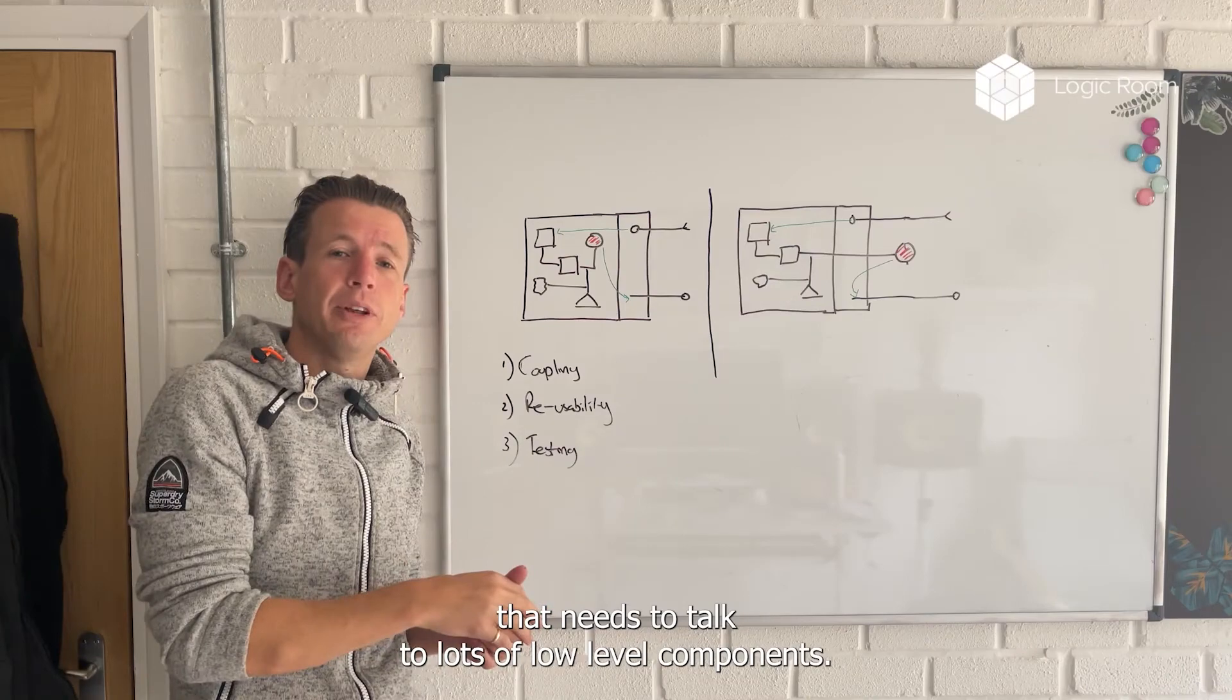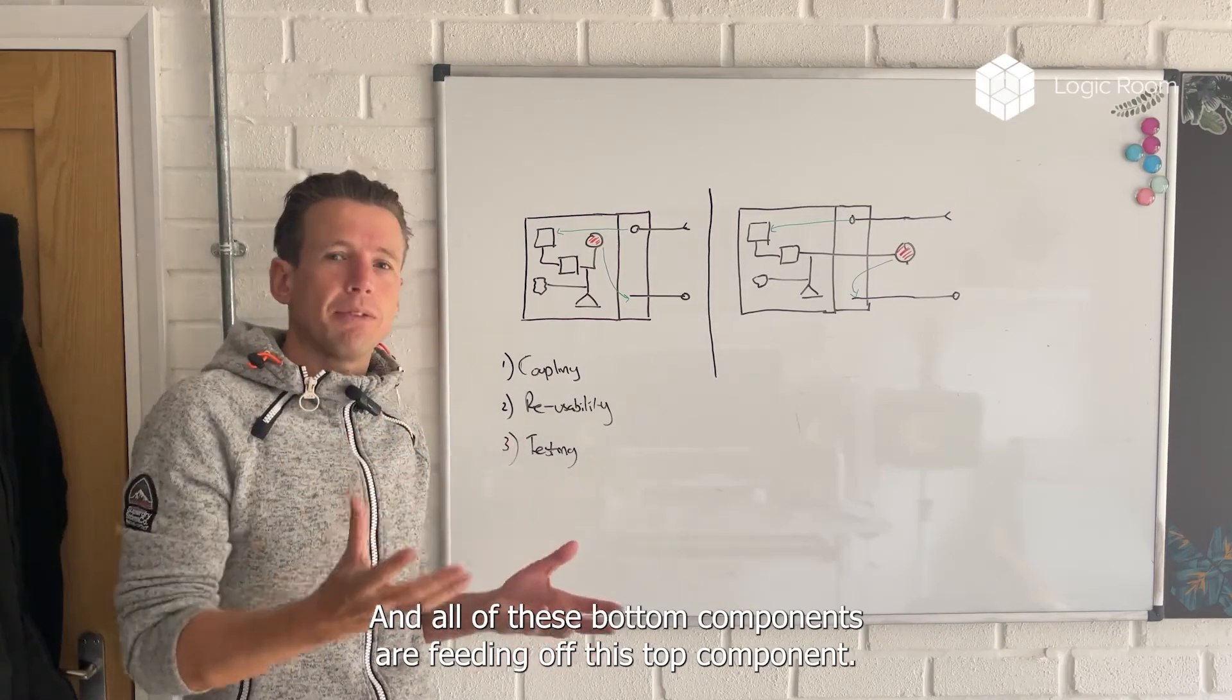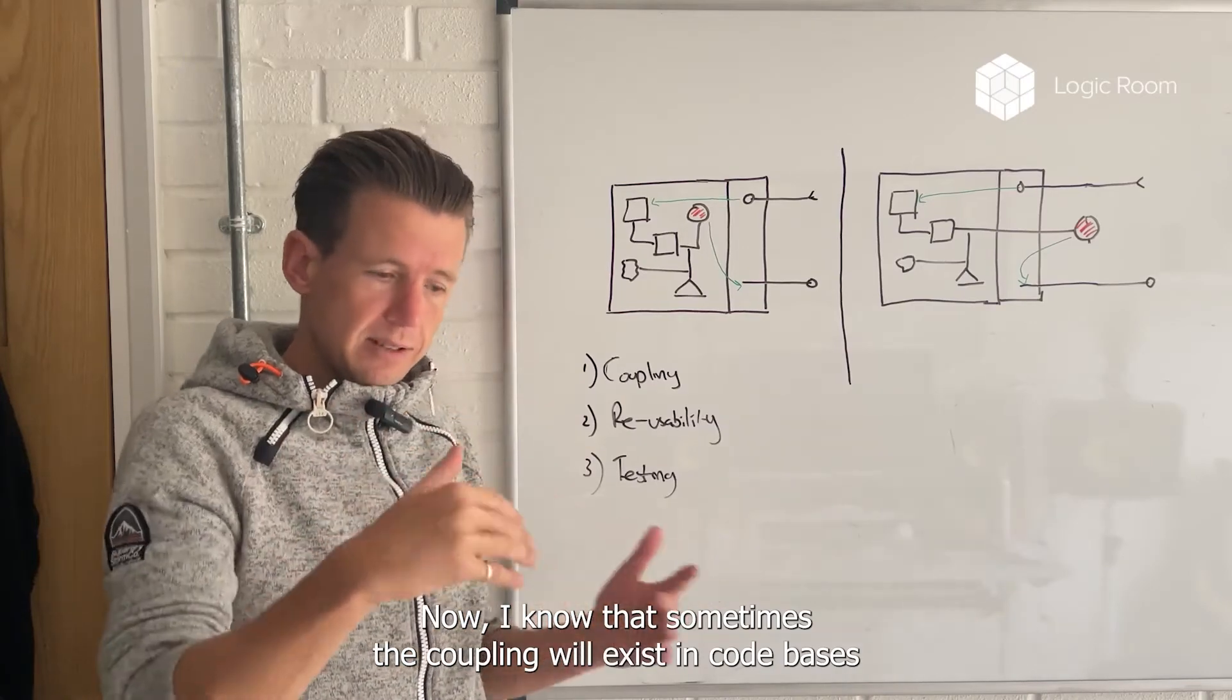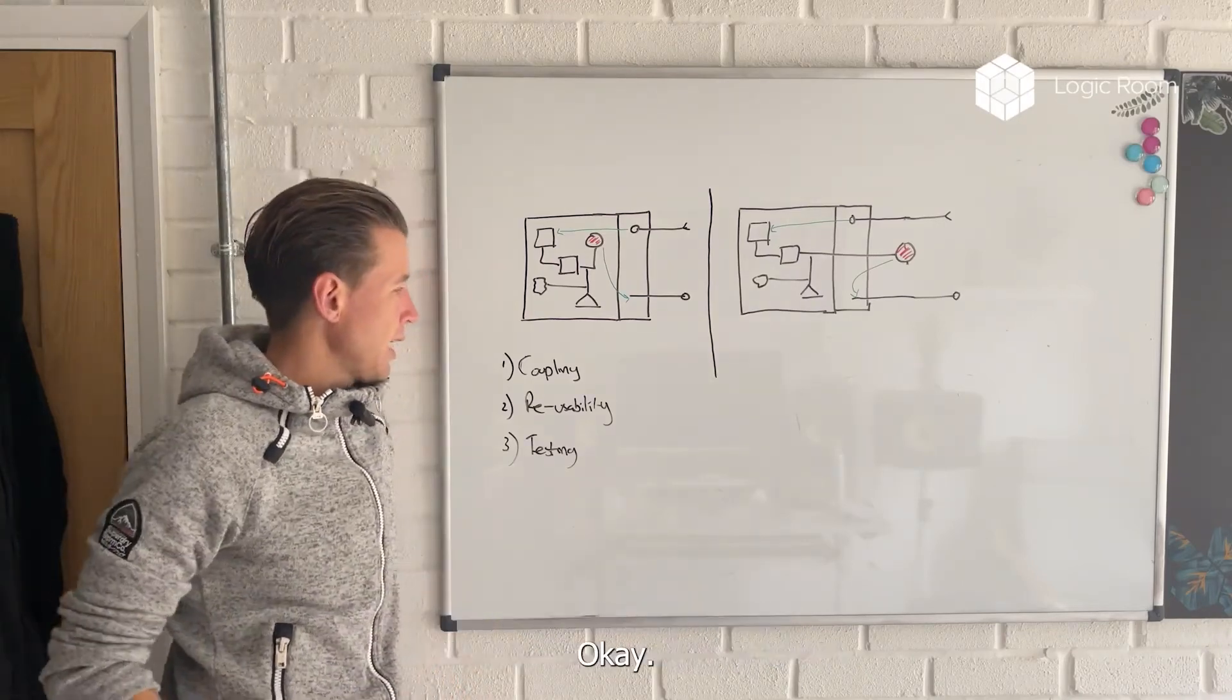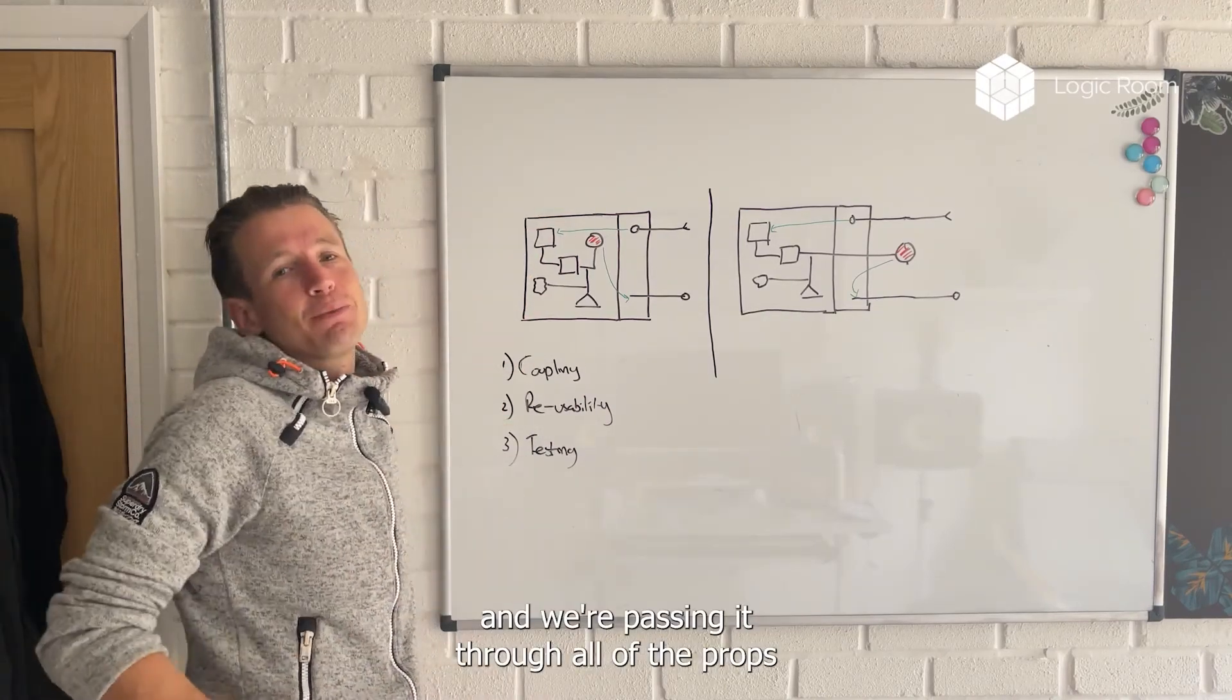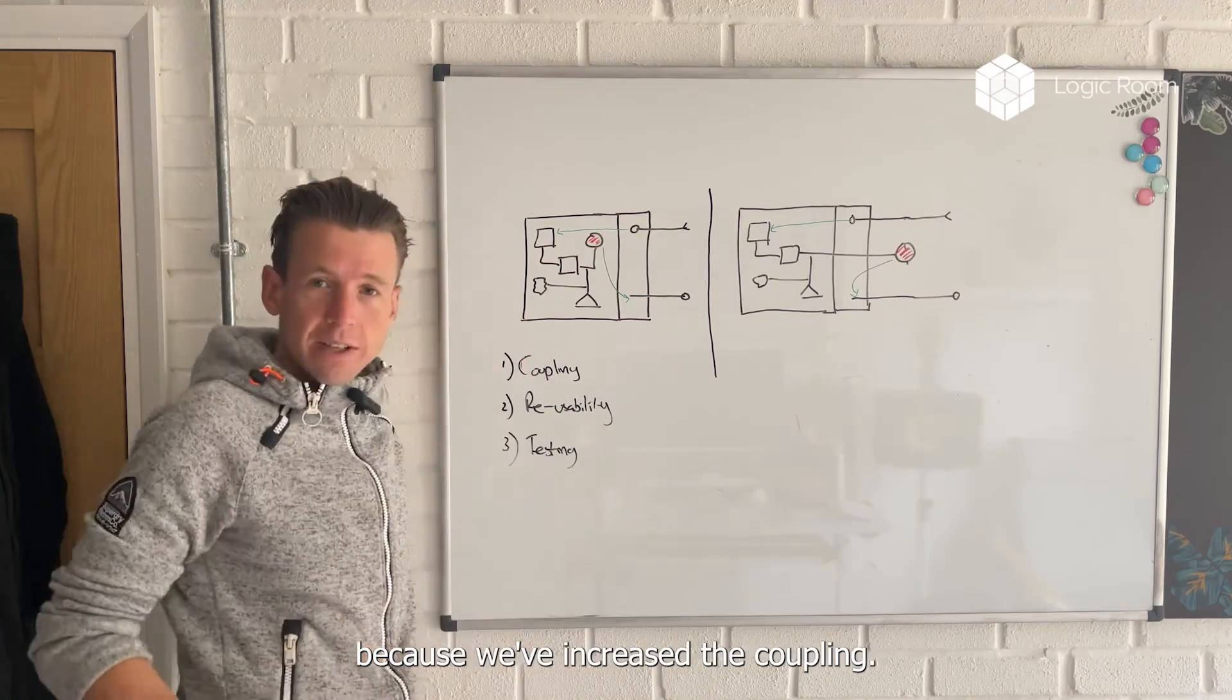So if we have a component in a React app and we have a high level component that needs to talk to lots of low level components, or it needs to do things like provide state or provide a top level prop tree, and all of these bottom components are feeding off this top component, we now have a situation where we've got interdependency between these files. Now sometimes the coupling will exist in code bases between files, but in React it can often happen as a side effect of building it in its tree shape, which it wants. And when we get that high amount of coupling, we reduce the reusability. If we are passing information through the React layer and we're passing it through all of the props and all of the state mechanisms and all of the hooks, we are going to automatically reduce reusability no matter how hard we try, because we've increased the coupling.